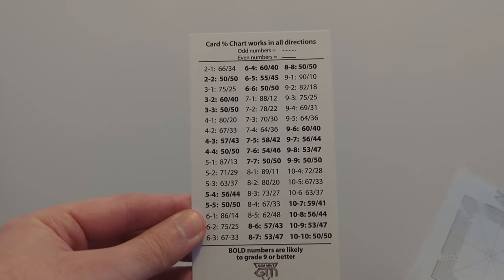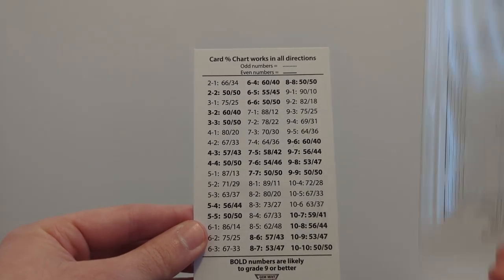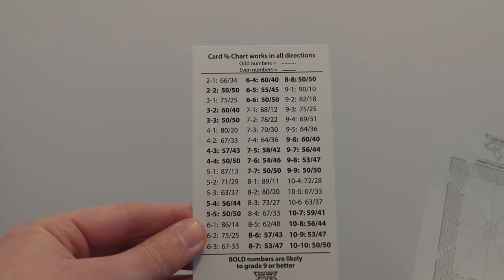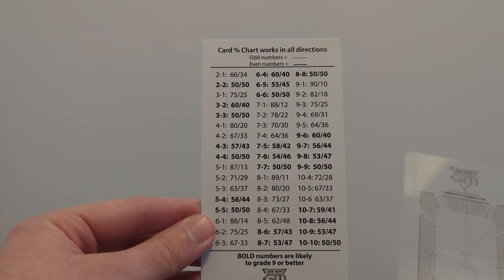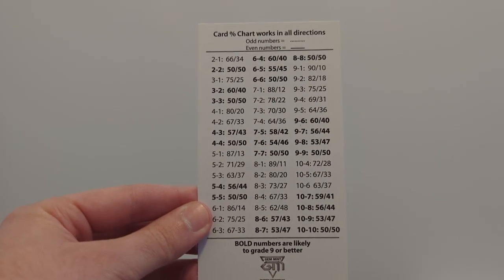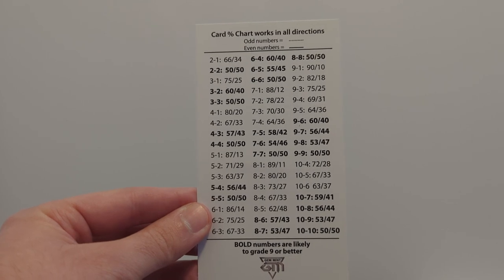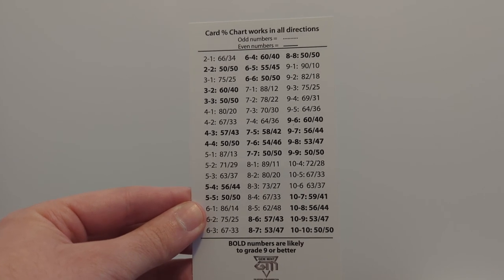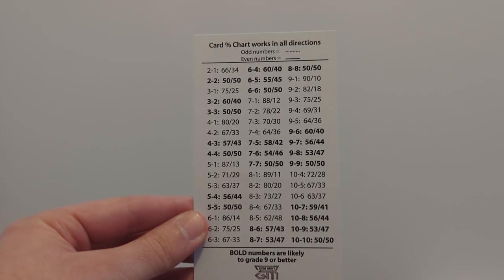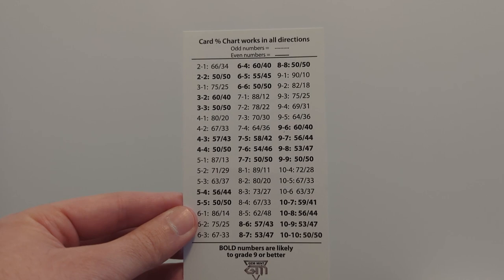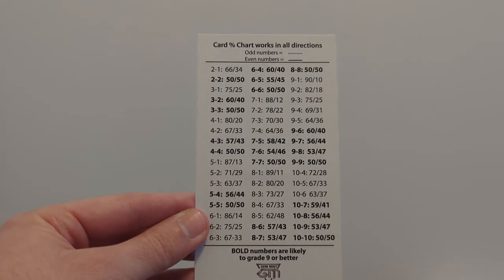There is a bit of a threshold with PSA — they say that if it's within 60/40, it can still qualify for a 10, so it doesn't need to be a perfect 50/50. That might be something you factor in when deciding to send cards in. If you're sending to another company that does 9.5 grades — because PSA doesn't do 9.5s — then this might be more relevant if you're trying to gun for a pristine 10 or something like that. I'll show an example with a card in a sec.